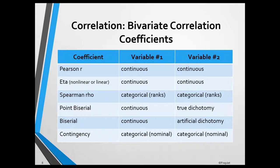Finally, the contingency coefficient is used when both variables are measured on a nominal scale. It would be the appropriate correlation coefficient to determine the correlation between gender and delusional disorder subtype.